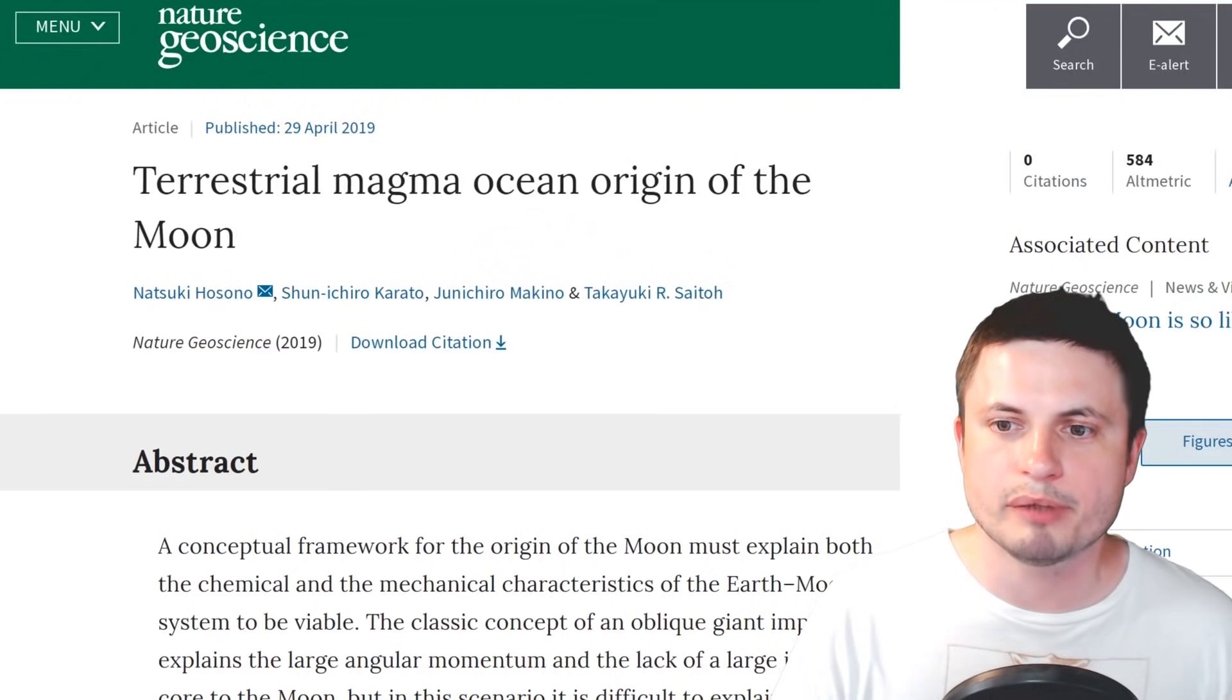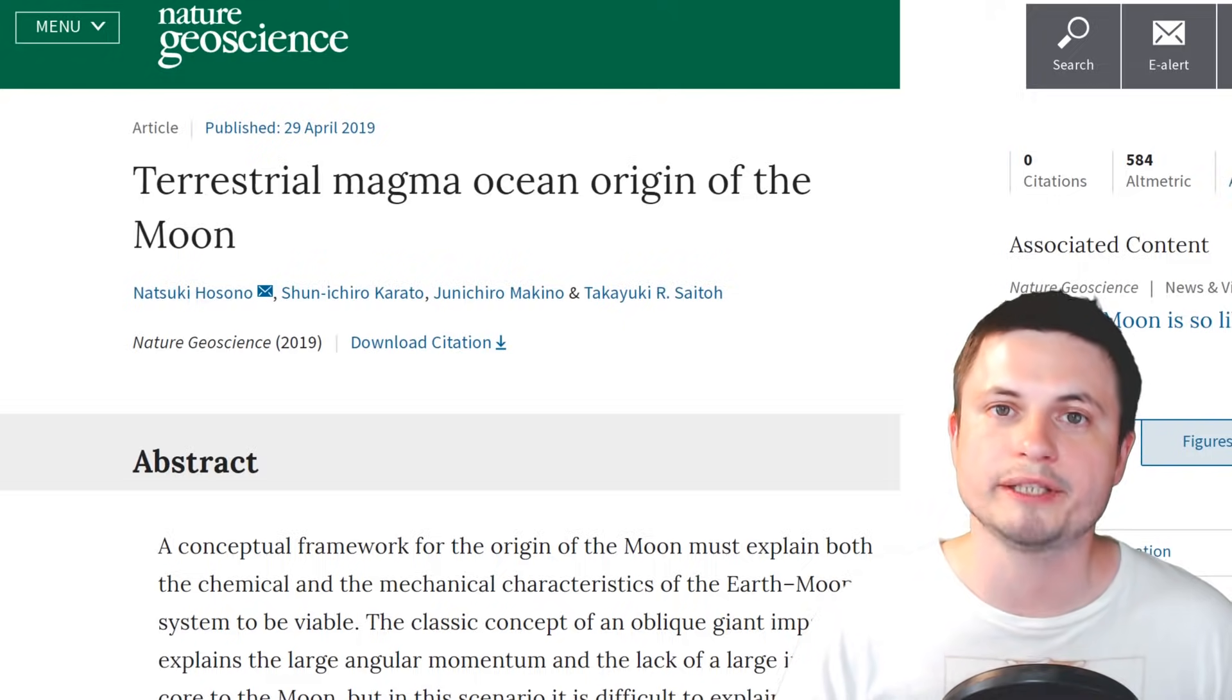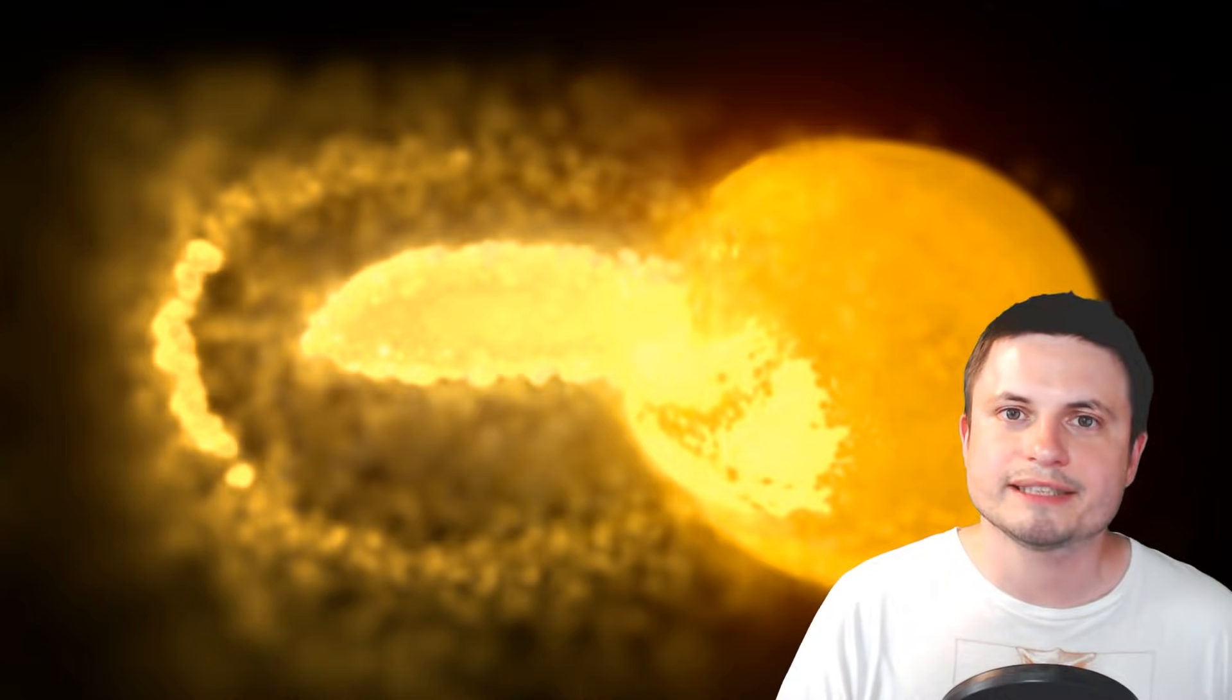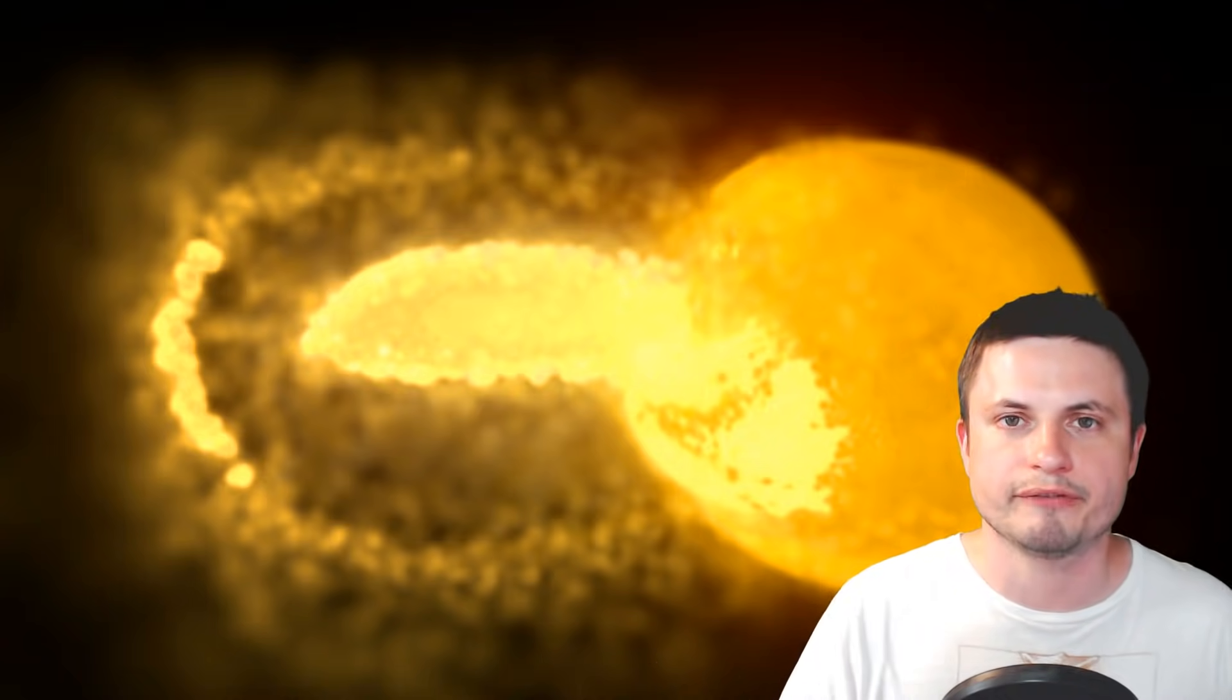And the new research that was recently posted in Nature by Natsuki Hosono and the team known as Terrestrial Magma Ocean Origin of the Moon explains this really well. And obviously they discovered this by running a lot of simulations. So what exactly did they discover? Well after running lots and lots of simulations they found that you could actually create the moon with the composition similar to planet earth and in the location where we find it today by doing the following.